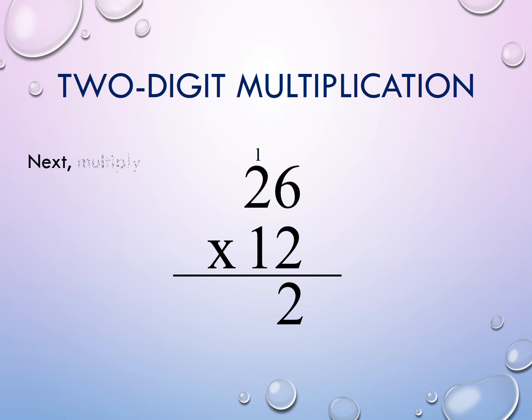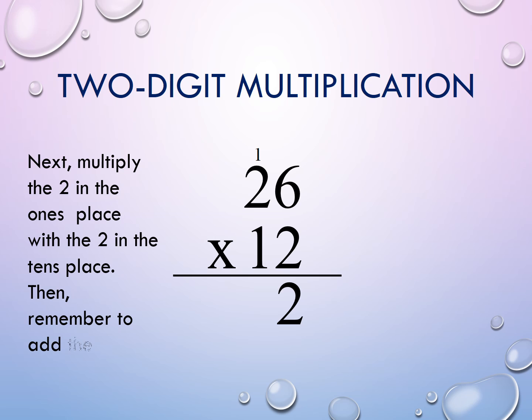Next, multiply the 2 in the 1's place with the 2 in the 10's place. Then, remember to add the 1 you regrouped. Think, 2 times 2 equals 4. 4 plus 1 equals 5.